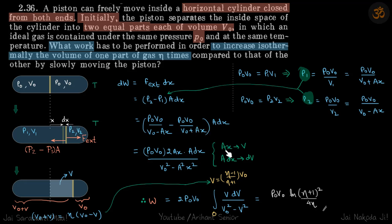So we'll put AX as V. So that means if this has moved by X amount, then this volume will be V and A dX will be dV. So we'll put that. So A dX will put as dV, this AX becomes V. 2 P0 V0 will come out and divide by V0 squared minus V squared. So that's what we have done here.